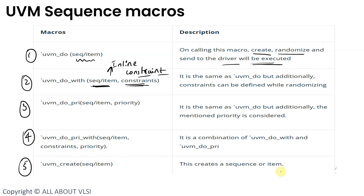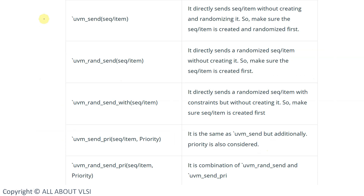The fifth macro is `uvm_create, which is going to create a sequence item. It only creates the instance of the sequence item — it is not going to randomize it and it is not going to send it to the driver. The sixth macro is `uvm_send.